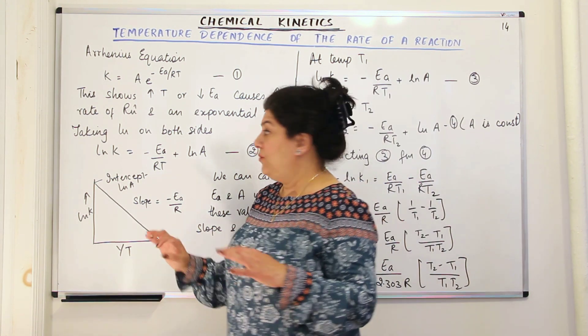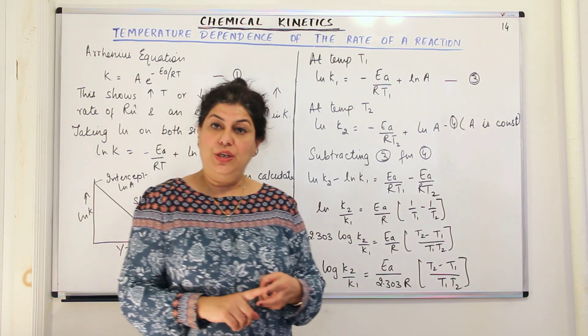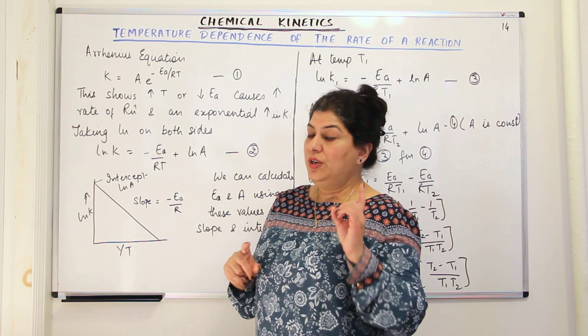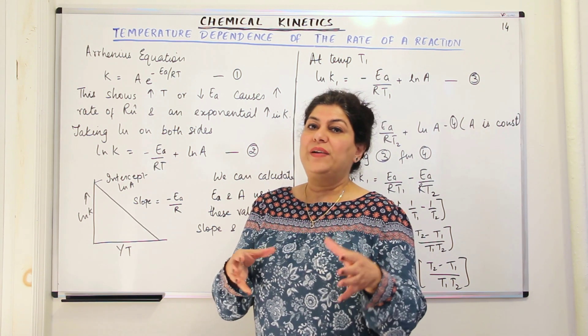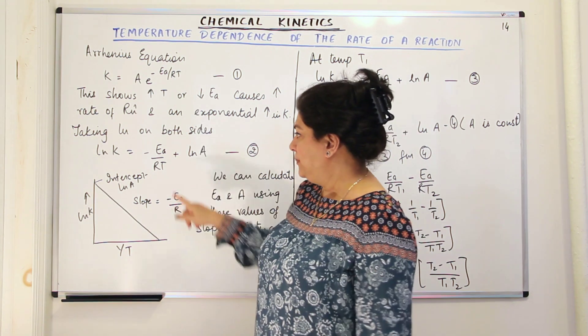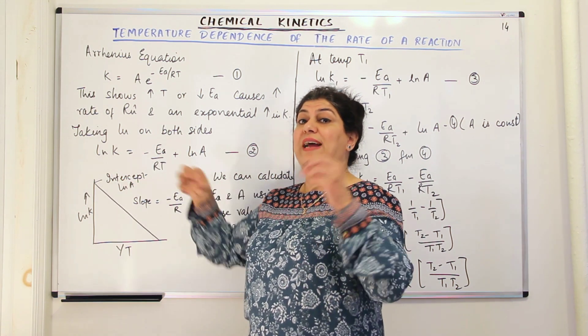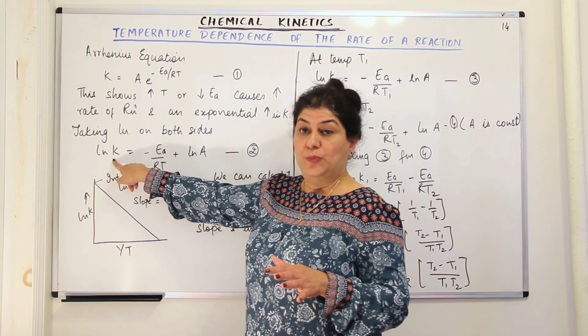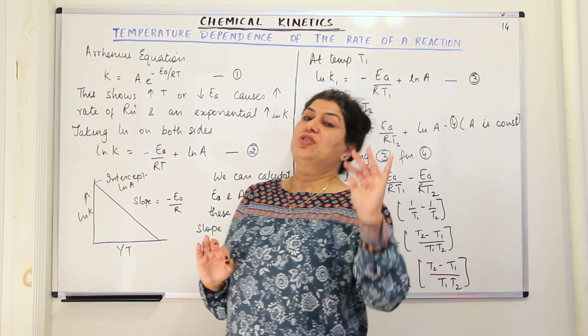Now let us assume that we carry out a reaction at two different temperatures, at temperature T1 and at temperature T2 and we apply the Arrhenius equation at both the temperatures. For the same reaction, you remember, I told you A, that is the Arrhenius factor, is constant for a reaction. So for any chemical reaction, the value of A is fixed. So if we carry out the reaction at two different temperatures, let us say T1 and T2. T1 and T2 will be different. The rate constant at different temperatures is different. So rate constant for T1 will become K1, for T2 will become K2. But A will remain A because A is constant for any type of reaction irrespective of the conditions.